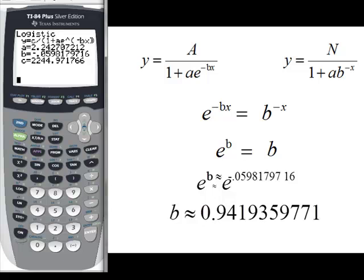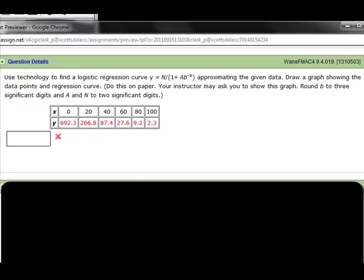Last thing, if we go back to a problem in WebAssign. Notice, it said round b to three significant digits and a and n to two significant digits.